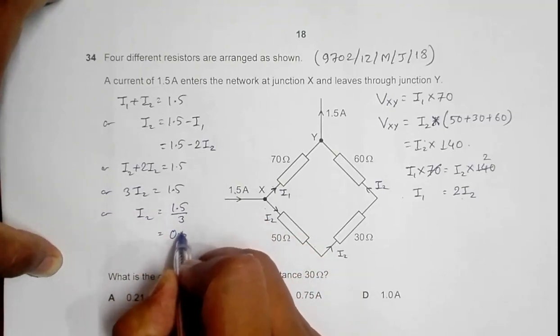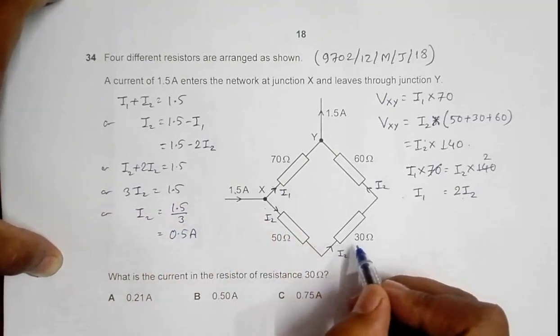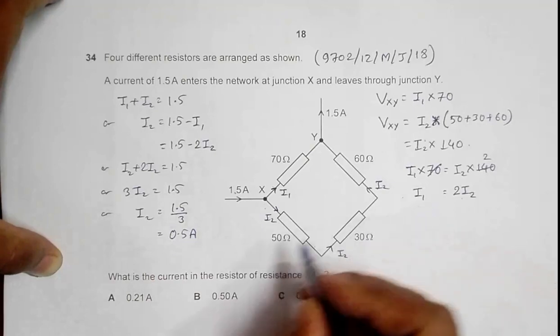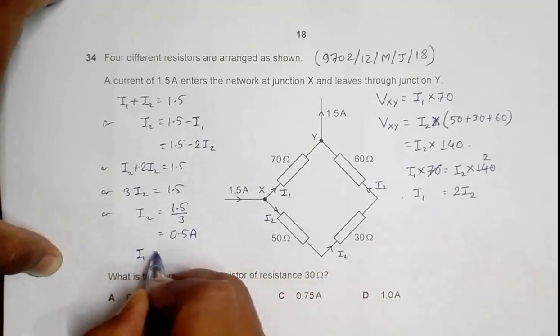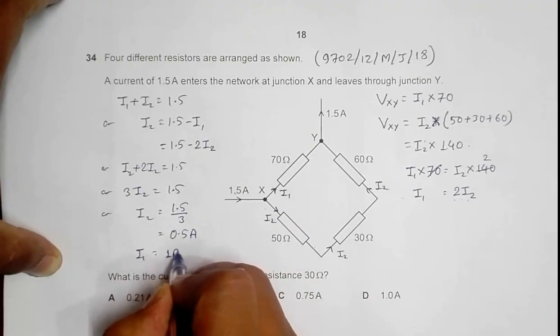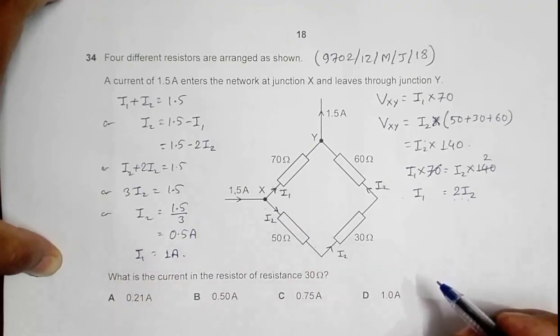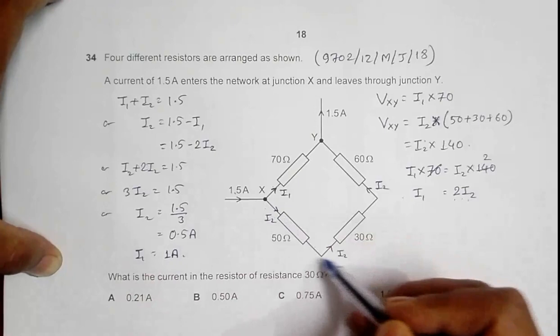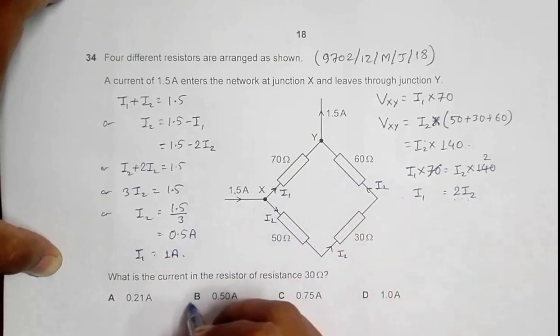Which gives me I2 equals 1.5 by 3, which equals 0.5 ampere. And I1 should be equal to twice of 0.5, so it should be 1 ampere. So the answer to this question is the current through here is 0.5 ampere, so choice B should be the correct answer.